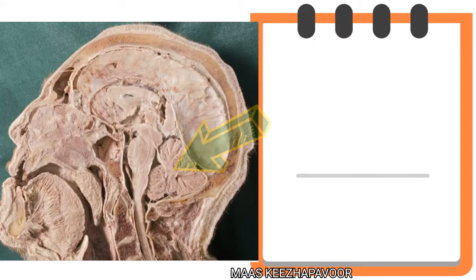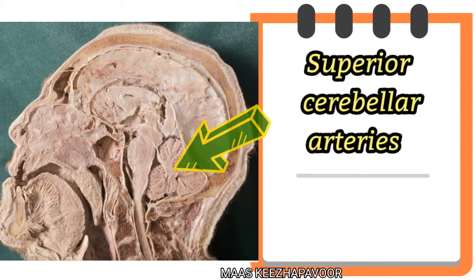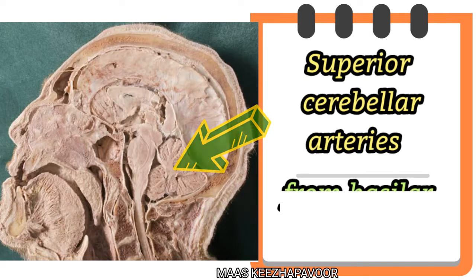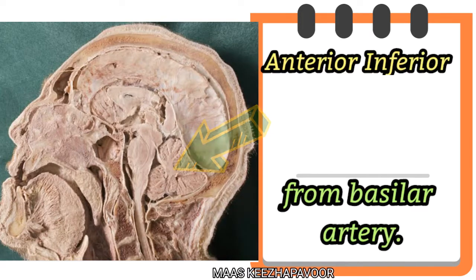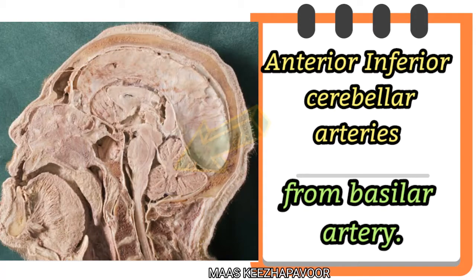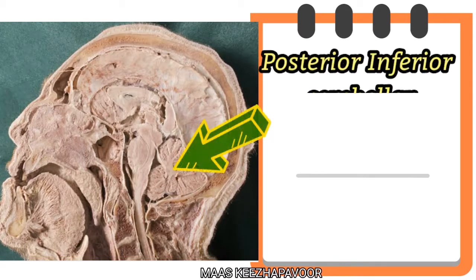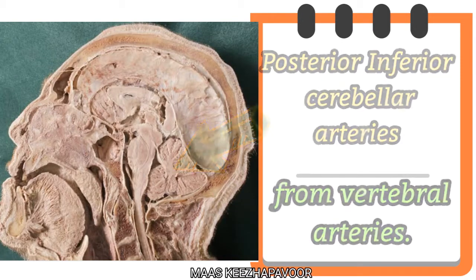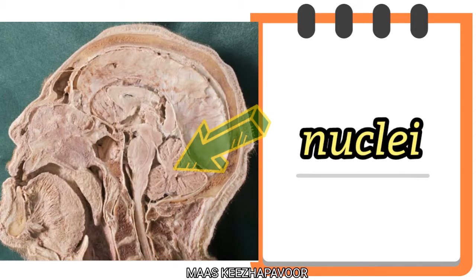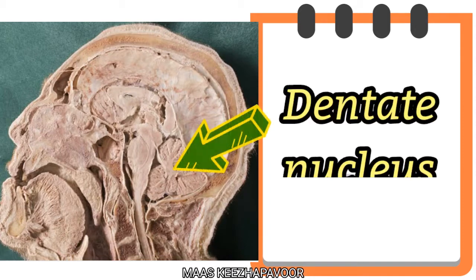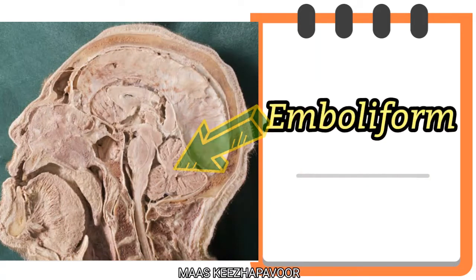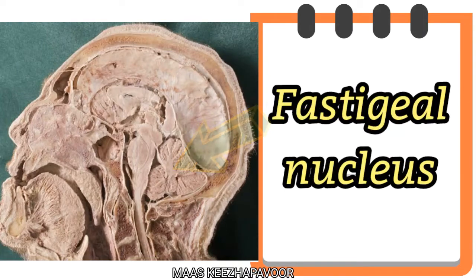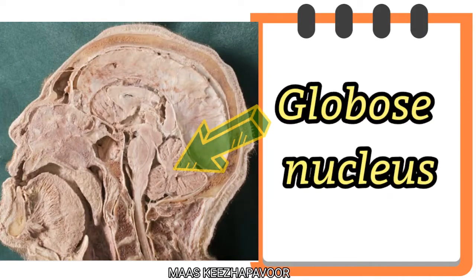The blood vessels supplying Cerebellum are Superior Cerebellar Arteries from Basilar Artery, Anterior Inferior Cerebellar Arteries from Basilar Artery, and Posterior Inferior Cerebellar Arteries from Vertebral Arteries. The nuclei present here are Dentate Nucleus, Emboliform Nucleus, Fastigial Nucleus, and Globus Nucleus.